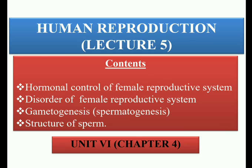Hello everyone, this is the fifth lecture of the chapter Human Reproduction. In the previous lecture we studied up to the female reproductive system. The topics we'll cover today include: hormonal control of the female reproductive system, disorders of the female reproductive system, gametogenesis — specifically spermatogenesis — and the structure of sperm.